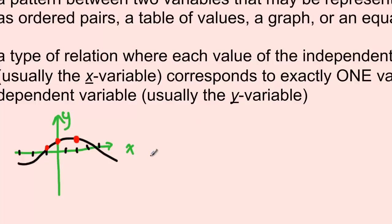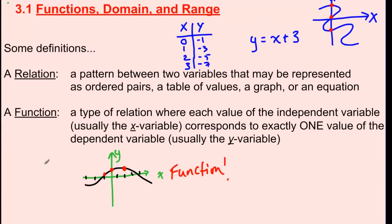Notice how anywhere on this curve, there's only one possible solution for y for any given x that I name. This is a function. So now that we know what a function is in comparison to a relation — remember, a function is just a type of relation — both examples I drew are relations, but only the second one is a function. And just to be clear, the x-axis is what we call the independent variable, and the y-axis is the dependent variable.